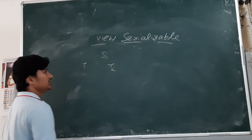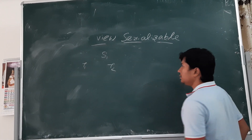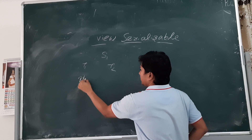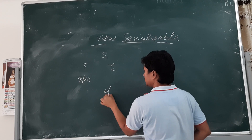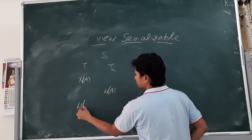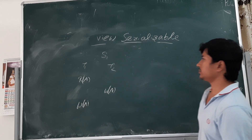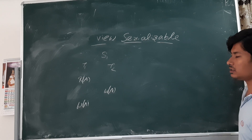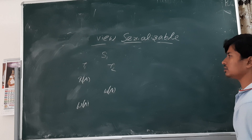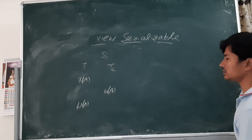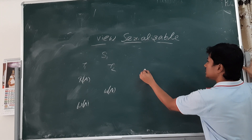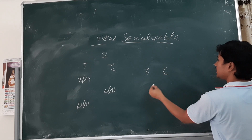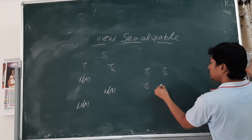Schedule S1 consists of two transactions, T1 and T2. Transaction T1 consists of read of A, and transaction T2 consists of write of A and write of A. Now, how many serial schedules are possible? If we have two transactions, we get two serial schedules: one where all operations of T1 execute first then T2, and the second where T2 executes first then T1.